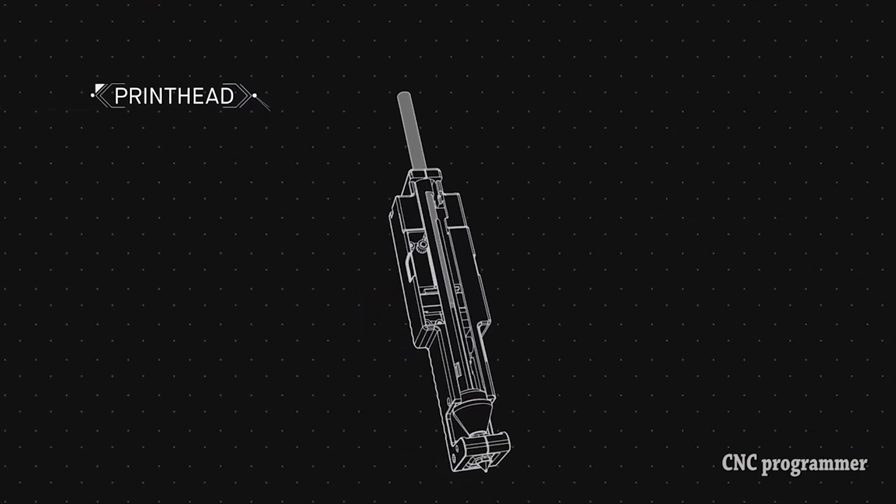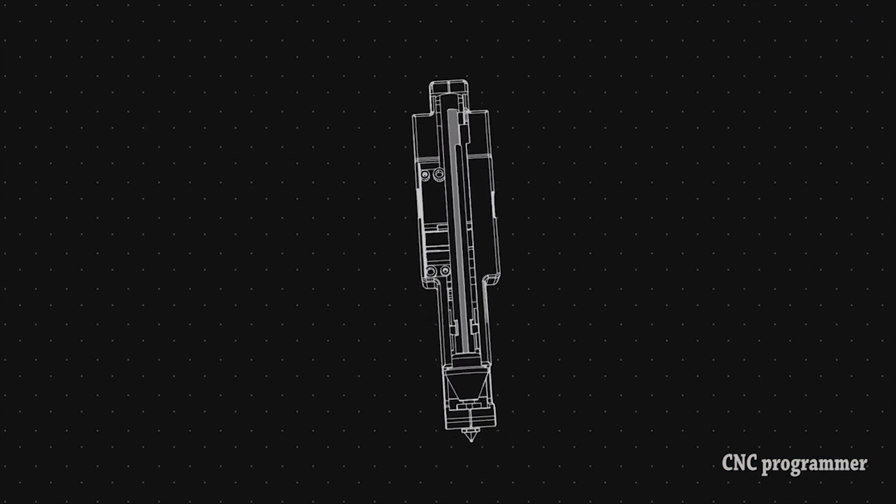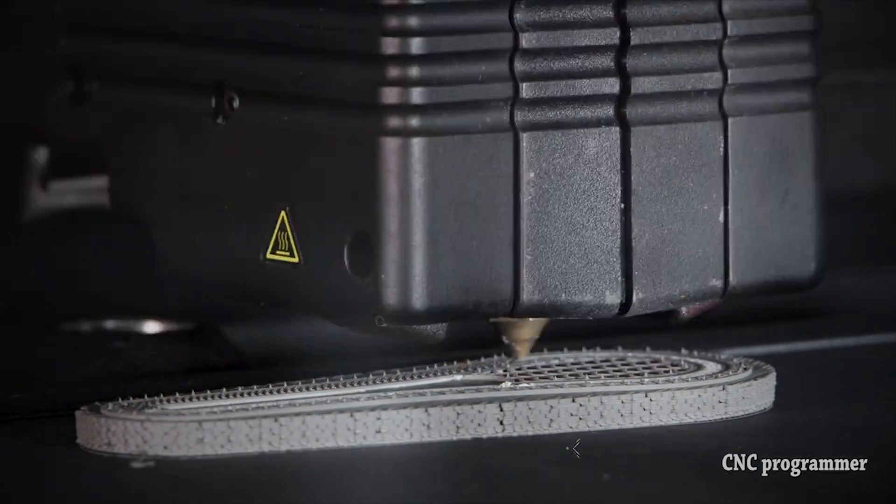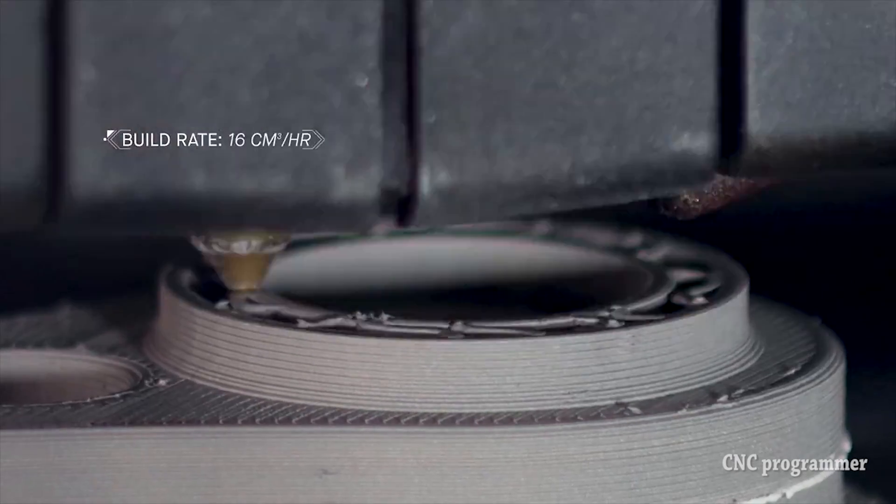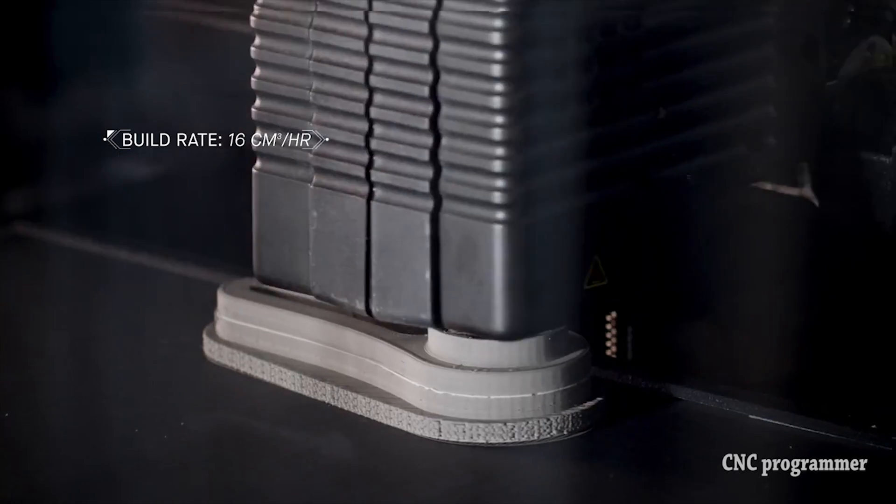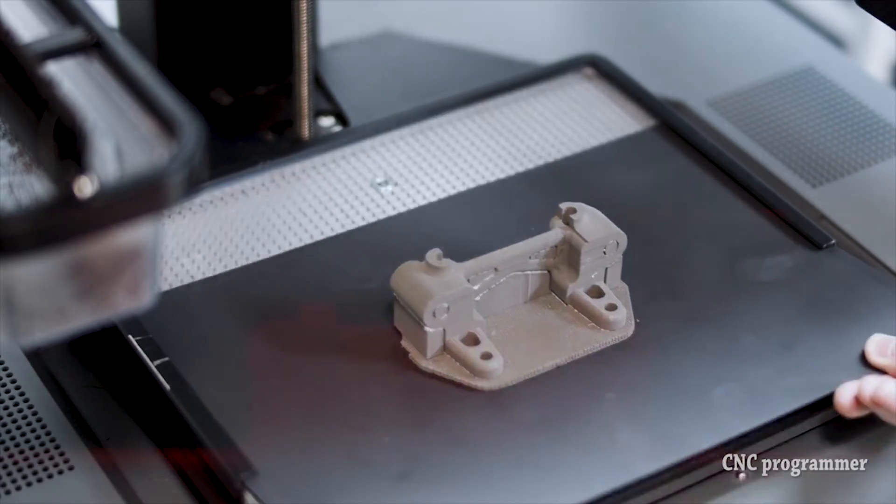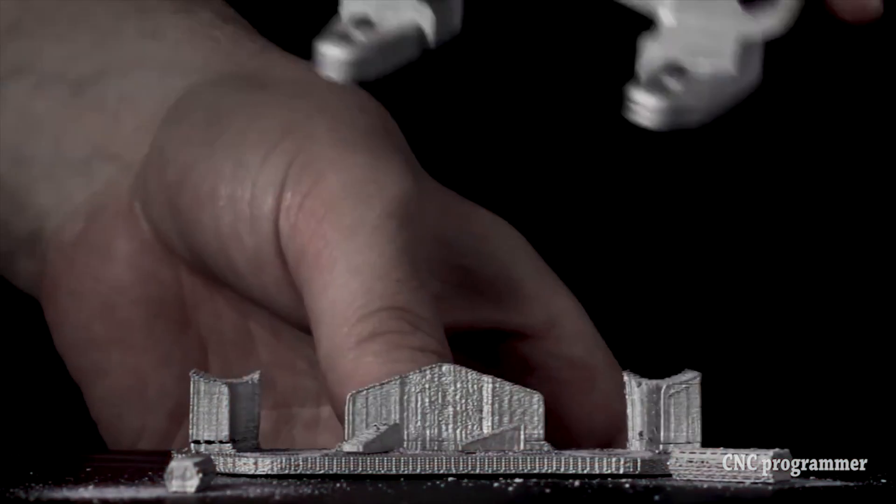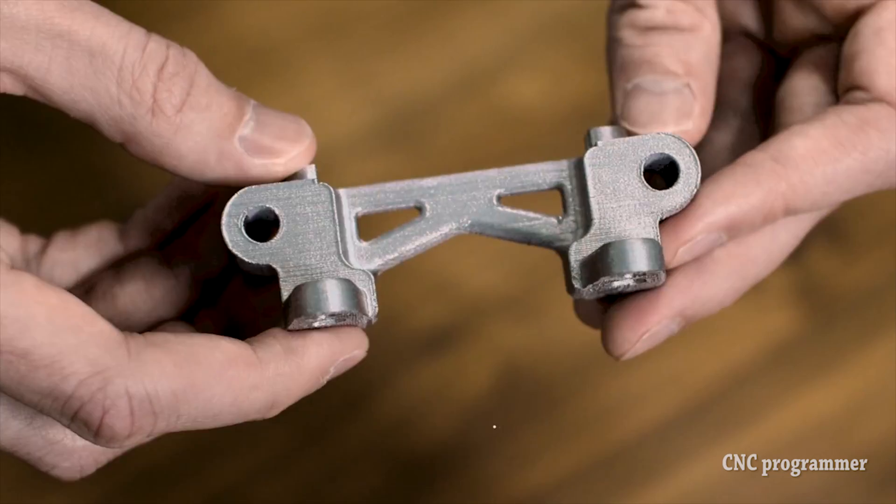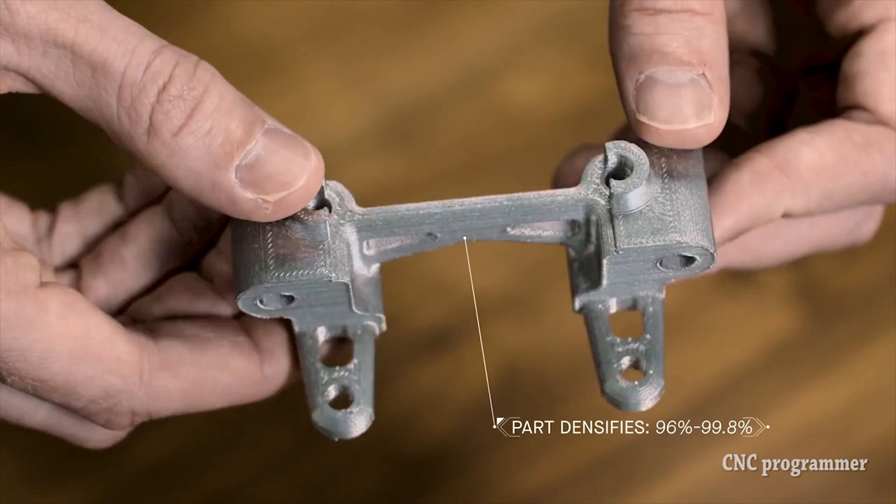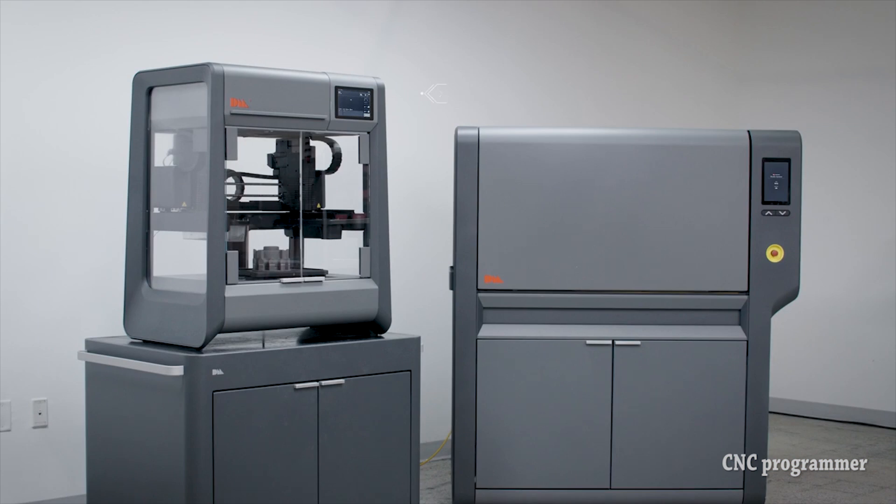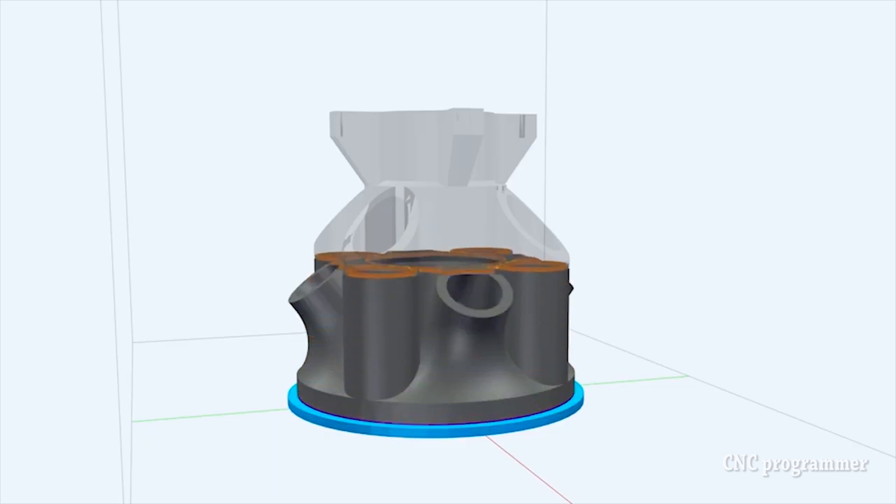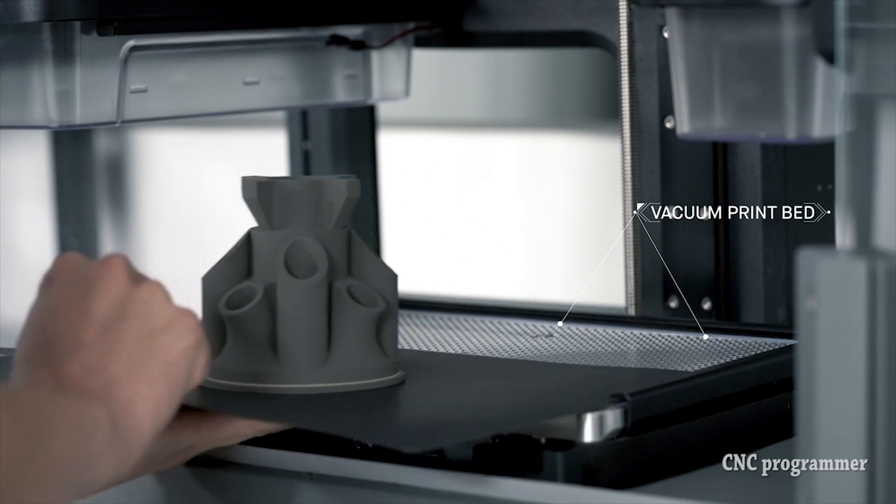The Evolution of FDM: FDM, pioneered by Scott Crump in the late 1980s, revolutionized the world of rapid prototyping. By extruding thermoplastic materials layer by layer, FDM printers could create three-dimensional objects from digital designs with remarkable speed and precision. This technology quickly found applications across industries, from aerospace and automotive to healthcare and consumer goods.